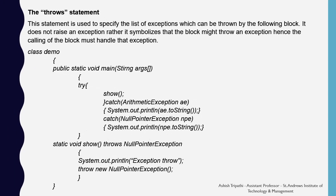The throws statement is used to specify the list of exceptions which can be thrown by the following block. It does not raise an exception; rather, it signals that the block might throw an exception. Hence, the calling method must handle that exception — it effectively warns the calling statement that the function or method might throw an exception if one occurs.